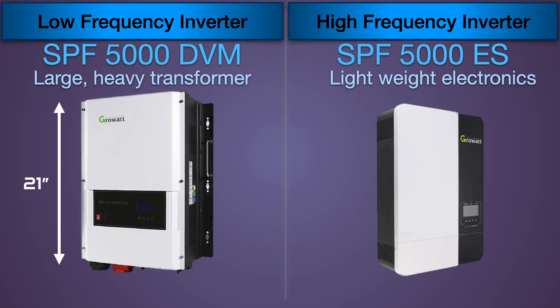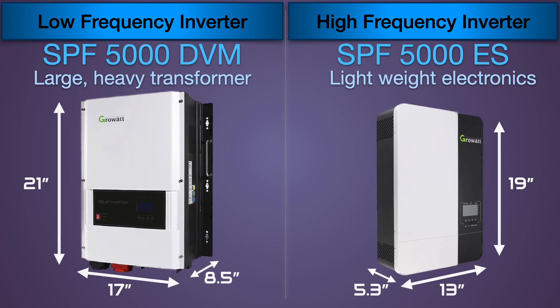Now, because this has a big heavy transformer in it, it's going to be larger and heavier. So we're going to compare this: 21 inches tall on the high frequency, it's only 19. We've got 17 inches wide on the low frequency versus 13 inches, 8.5 inches deep versus 5.3. So the low frequency is about 20 to 25% larger in all dimensions.